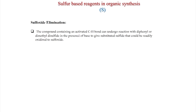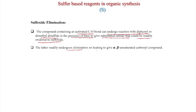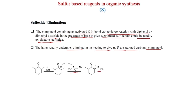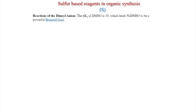Sulfoxide elimination: a compound containing an activated C–H bond can undergo reaction with diphenyl or dimethyl disulfide in the presence of base to give a substituted sulfide, which is readily oxidized to the sulfoxide. The sulfoxide readily undergoes elimination on heating to give an alpha,beta-unsaturated carbonyl compound. For example, 2,6-dimethylcyclohexanone treated with NaOH gives the anion, which reacts with disulfide to give alpha-sulfenylation; oxidation gives the sulfoxide, and heating eliminates to give the olefin.